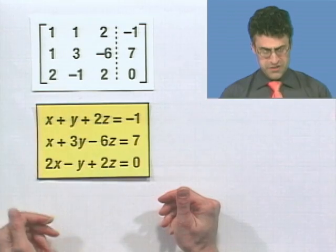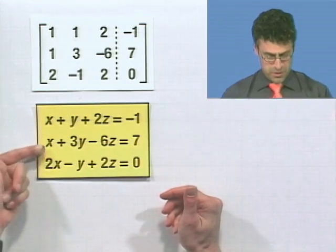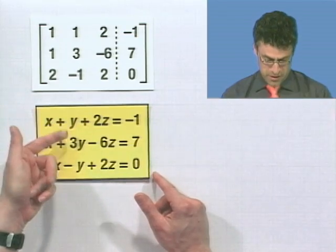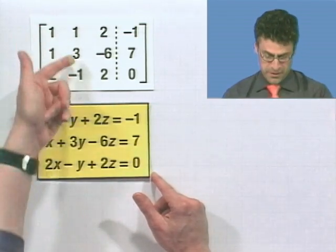Remember that in the first column are the coefficients for the x's, which you'll notice is 1, 1, 2. The y's are in the second column, which you'll notice is 1, 3, negative 1.